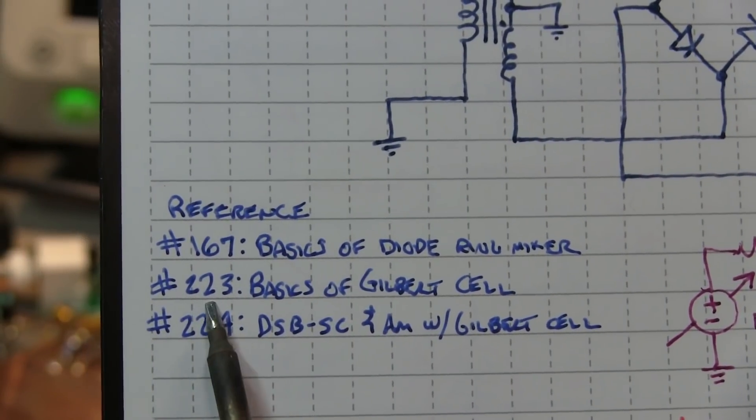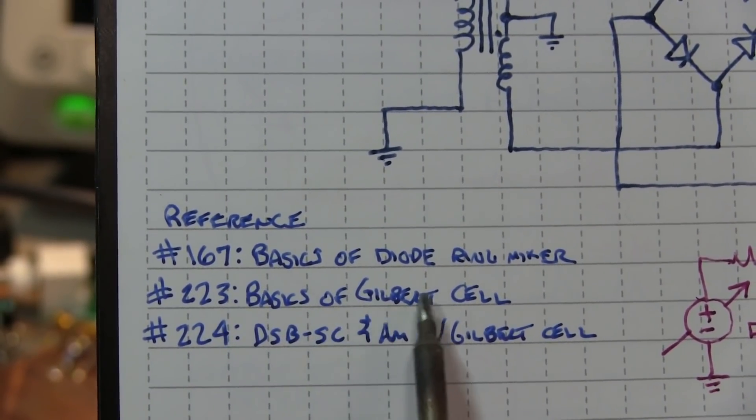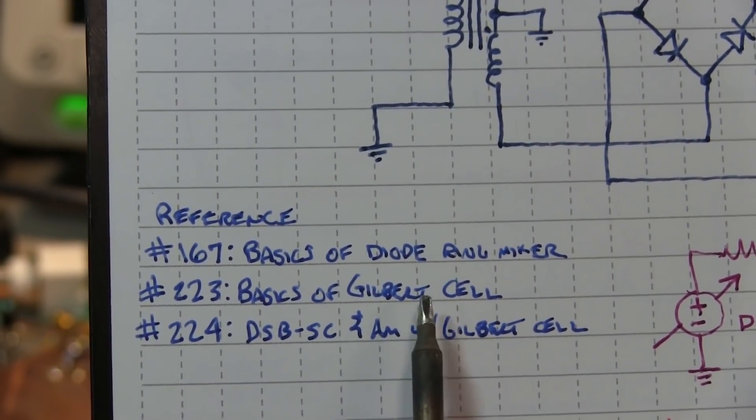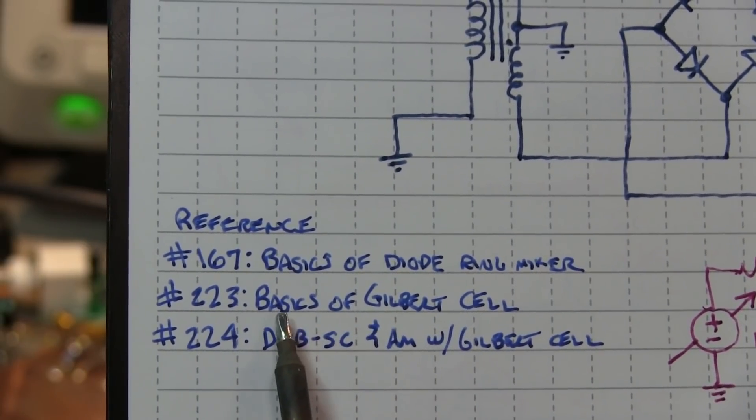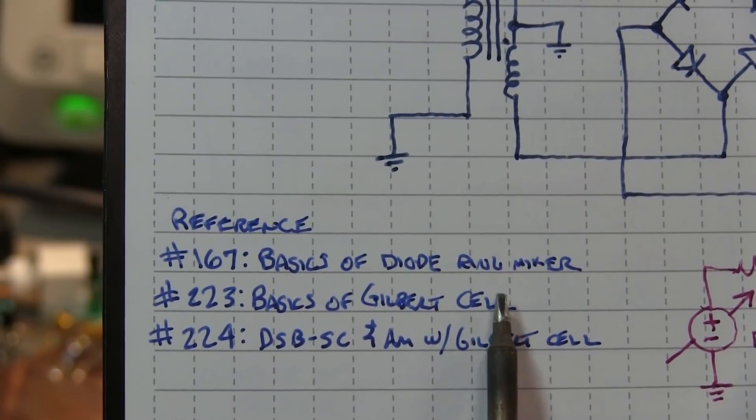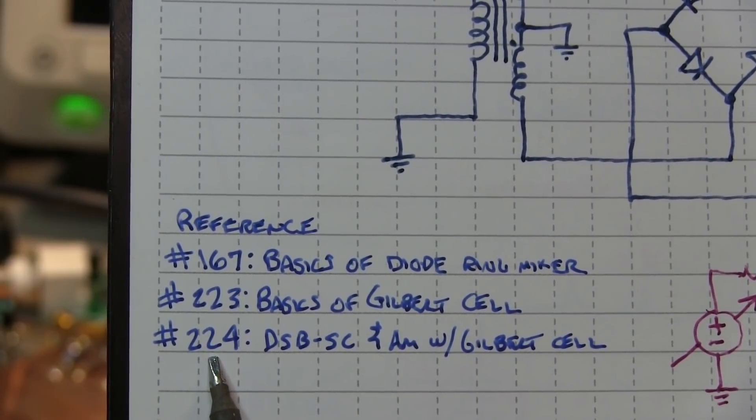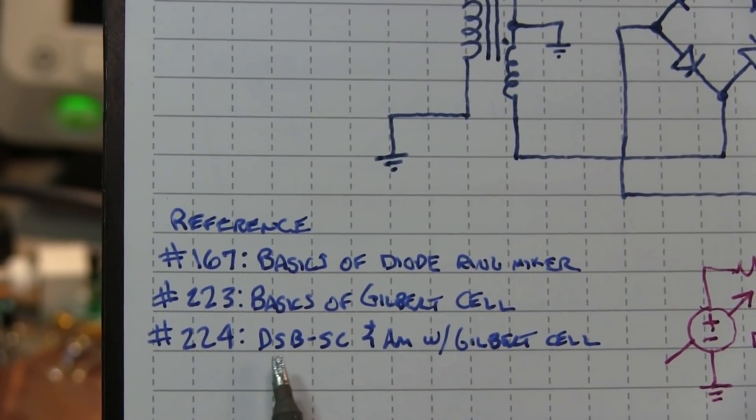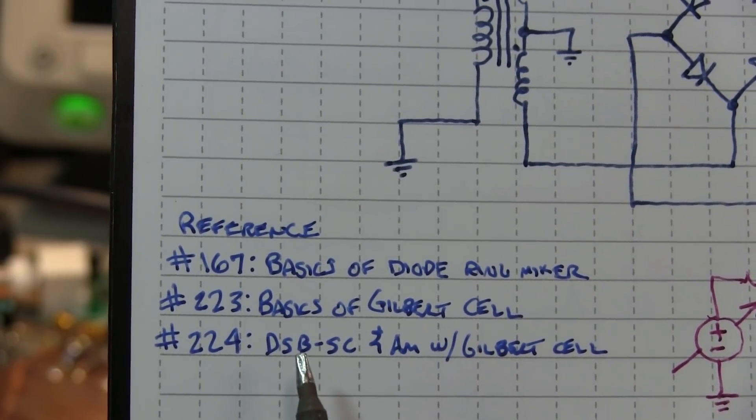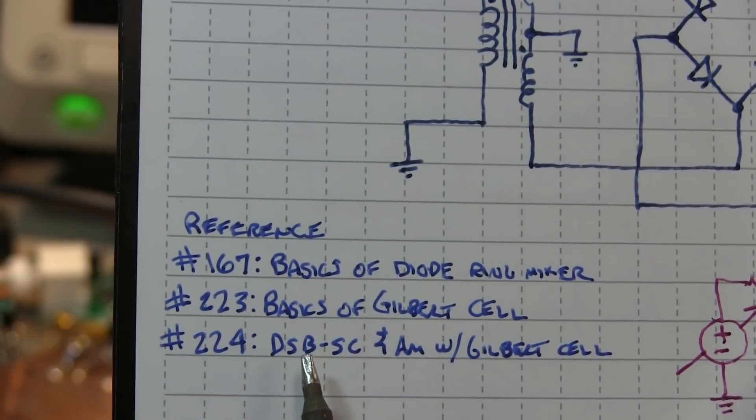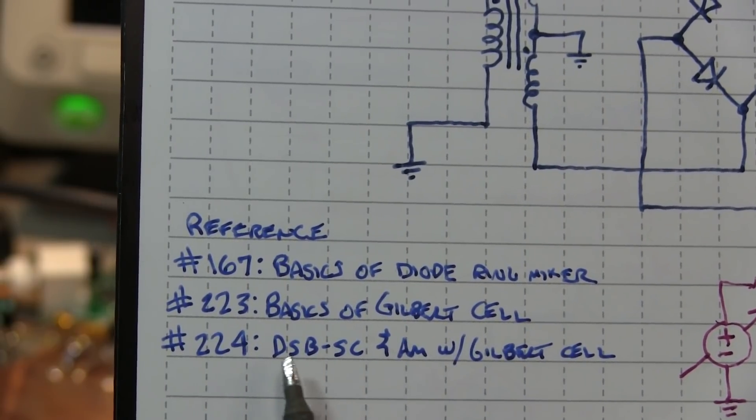It started with video number 223, which was the basics of the translinear four-quadrant multiplier, or the Gilbert cell. And I did a video describing what that did, and then followed that up with video number 224, that showed how to use that Gilbert cell as a mixer, similar to what's in the NE602 and 612 and the MC1496.